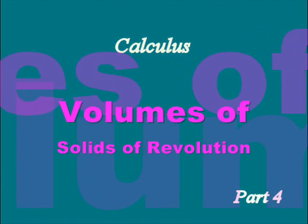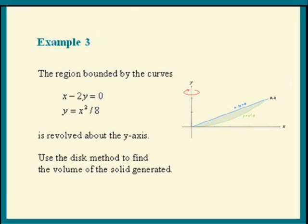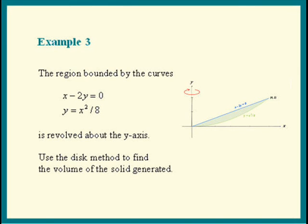Welcome to part 4 of finding volumes of solids of revolution. In this part we're going to revolve the same region above the y-axis using the disk method, and in the next part we'll use the shell method. The region is bounded by the curves x minus 2y equals 0 and y equals x squared over 8. We're going to revolve the region above the y-axis and use the disk method to find the volume of the solid generated.